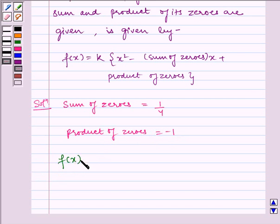We get f(x) = k[x² - (1/4)x + (-1)], which is k times x² minus 1/4 into x plus product of the zeros which is -1.